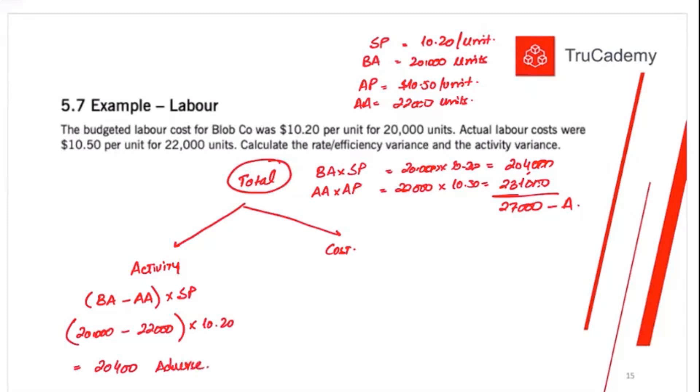Why is it adverse? Because here the budget was to produce 20,000 units or the hours you can understand for easier understanding. Labor were supposed to work 20,000 hours and labor actually worked 22,000 hours. Labor worked more than they were supposed to work.